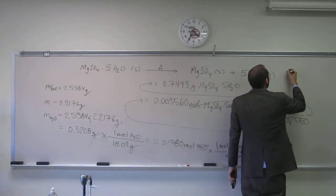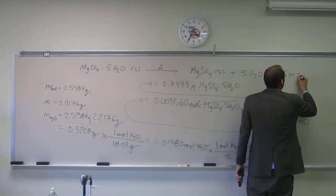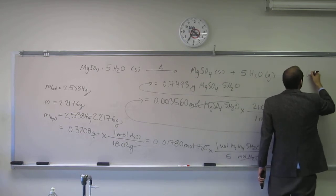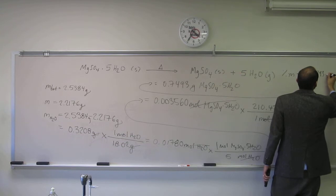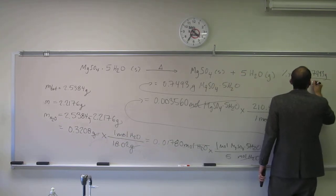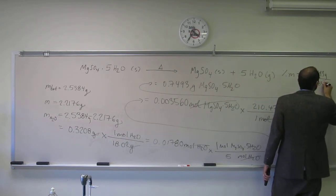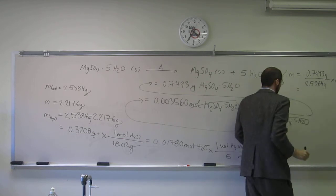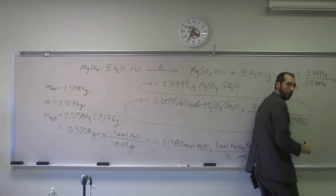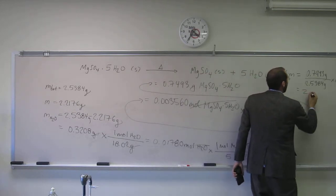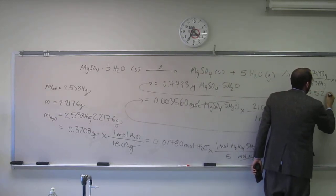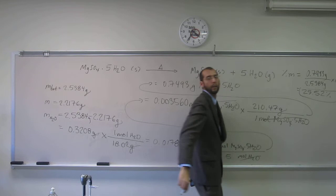2.5384. So how do I get the mass percent? Help me out. Yeah. What number's on top? 0.7493. Very good. You guys are good at that. Divide by 2.5384. And then I think it's like what? 29.5 percent.